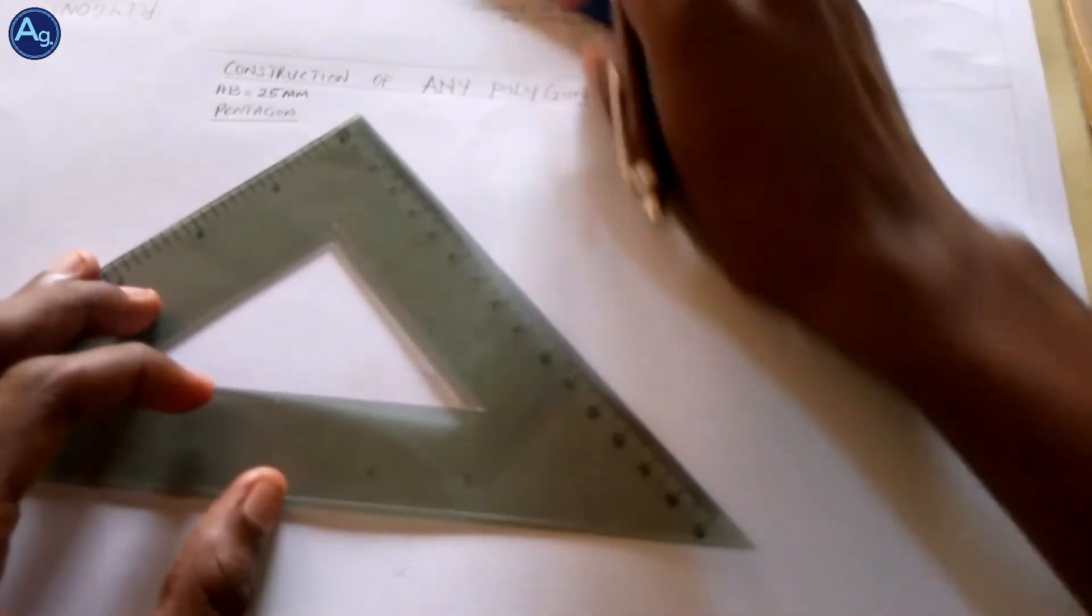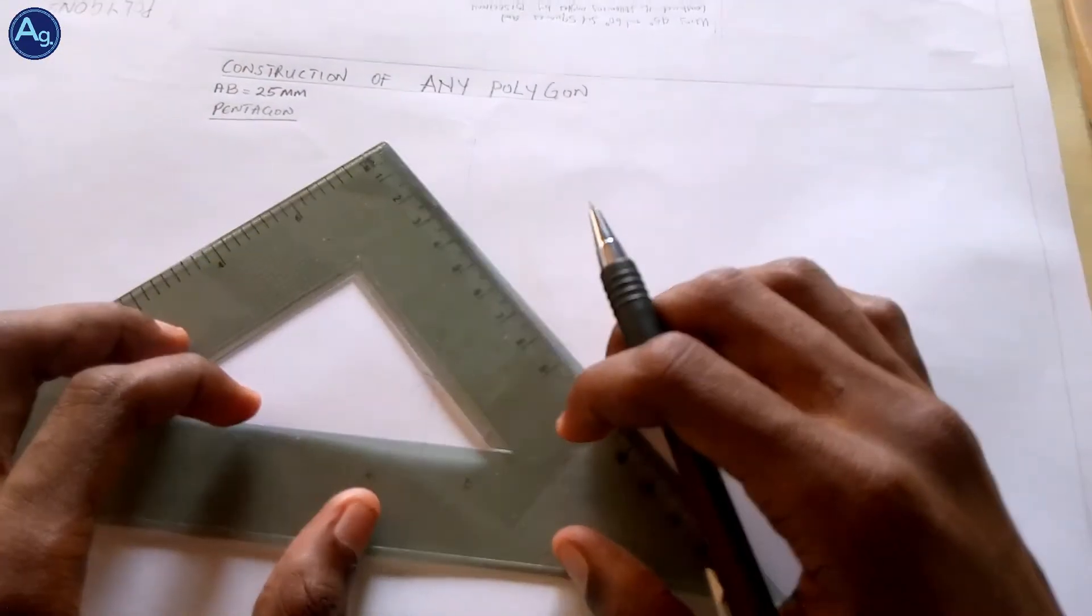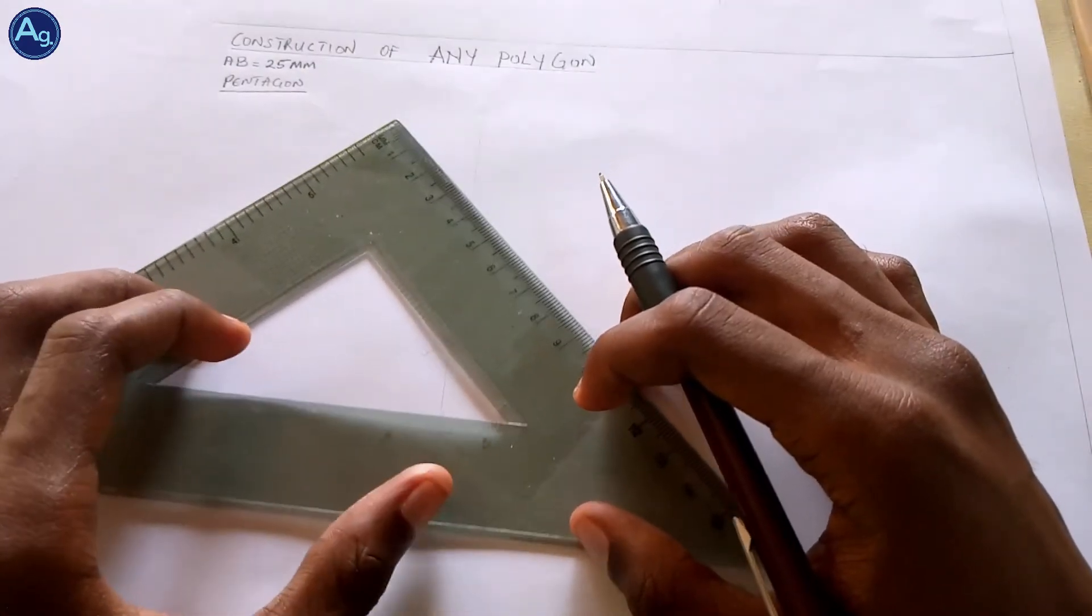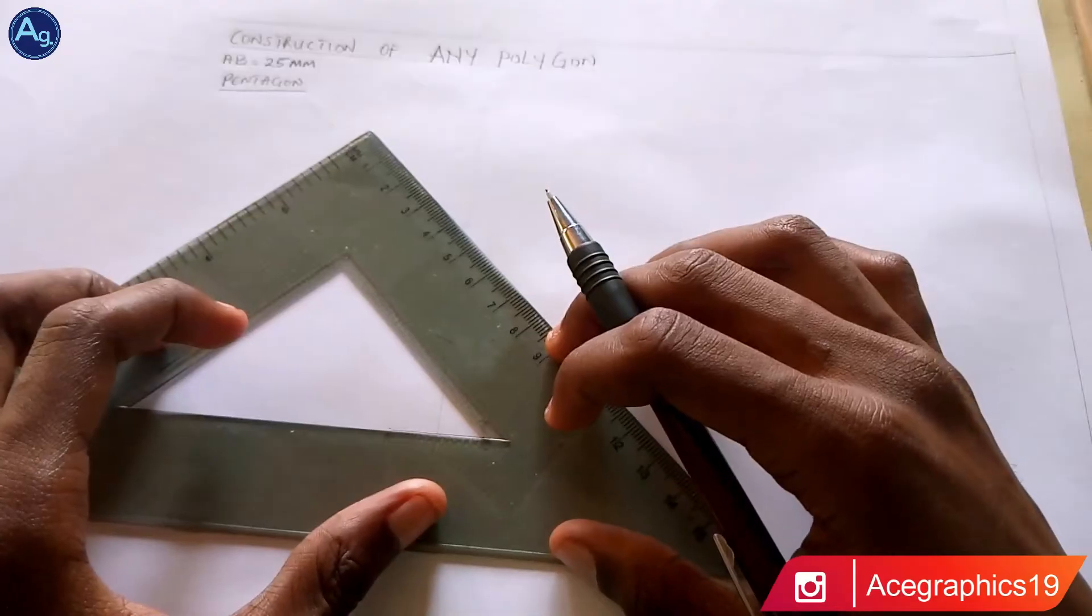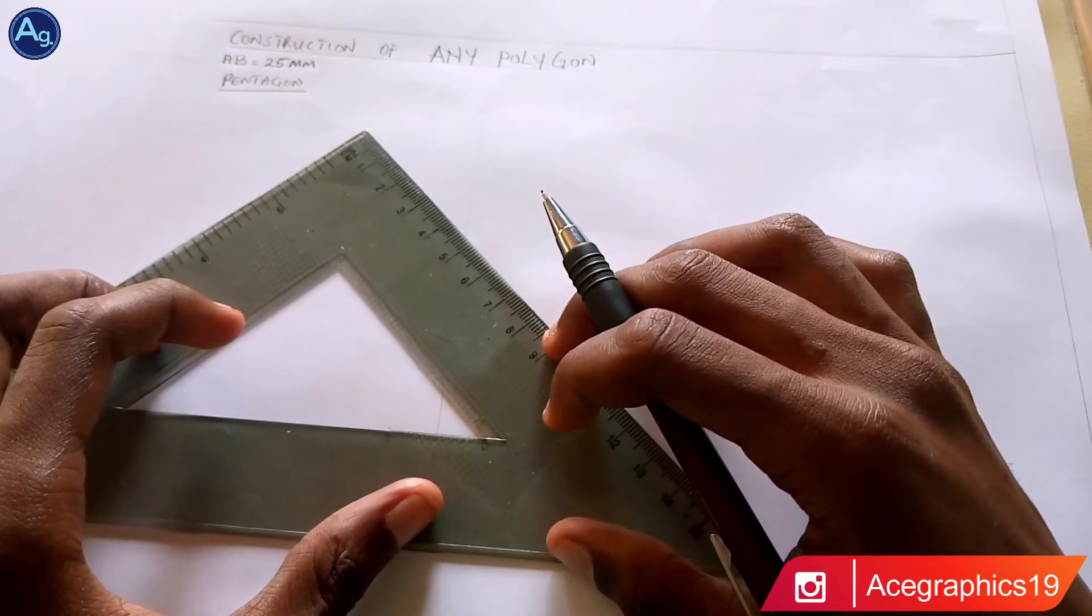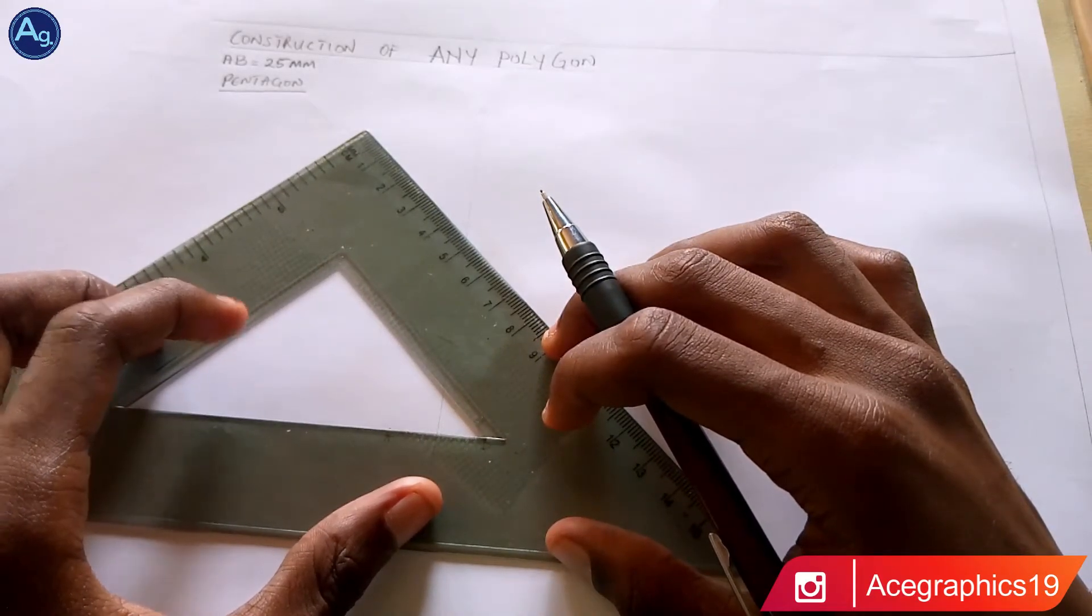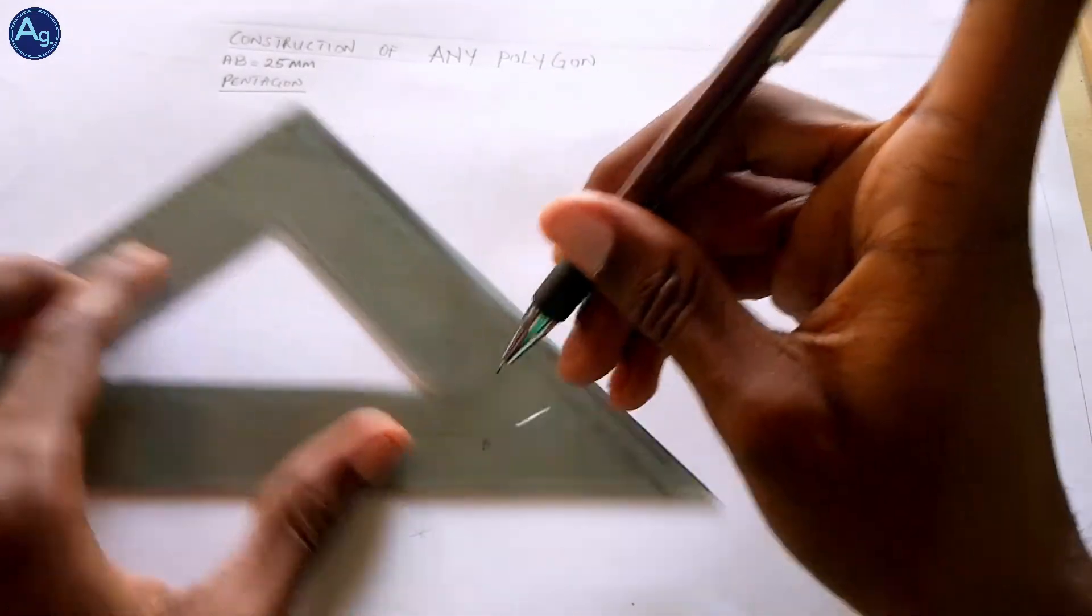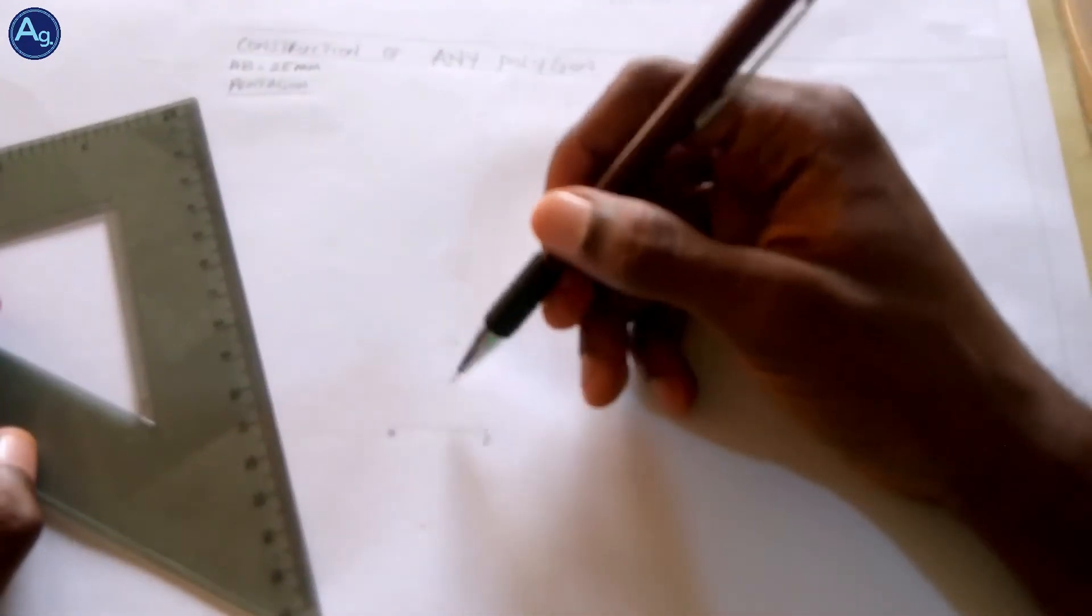So using your 45 and 60 degrees set square, we're going to use, we need to, we've got 45 degrees to cut this line.